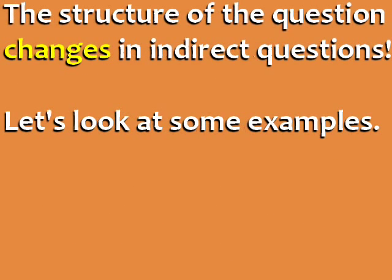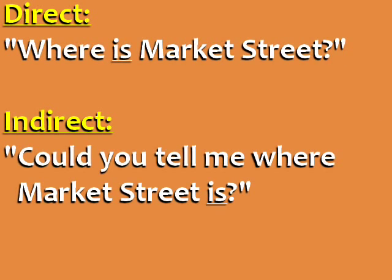The structure of the question changes in indirect questions. Let's look at some examples. Direct: 'Where is Market Street?' Indirect: 'Could you tell me where Market Street is?' In indirect questions, forms of the verb to be — like is, are, and were — come after the subject, not before the subject.